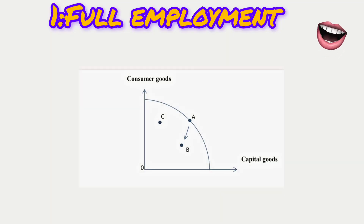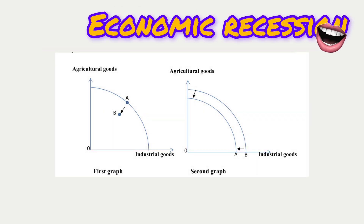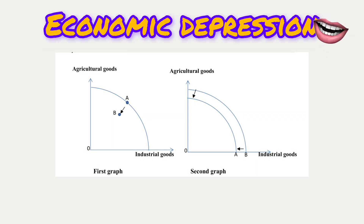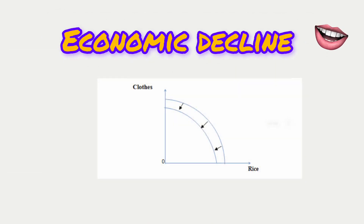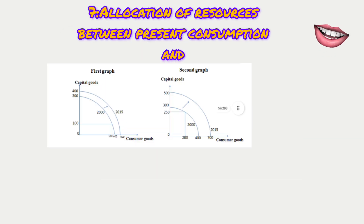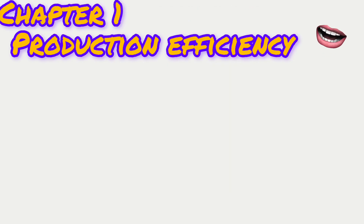The concepts covered are: 1. Full employment, 2. Unemployment and underemployment of resources, 3. Economic recession, 4. Economic depression, 5. Economic growth, 6. Economic decline, 7. Allocation of resources between present consumption and future consumption, and 8. Production efficiency.